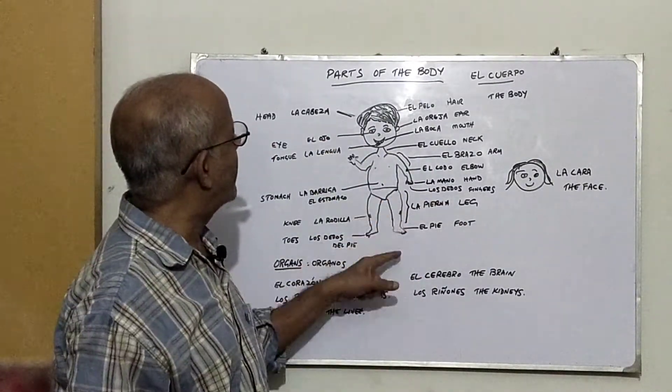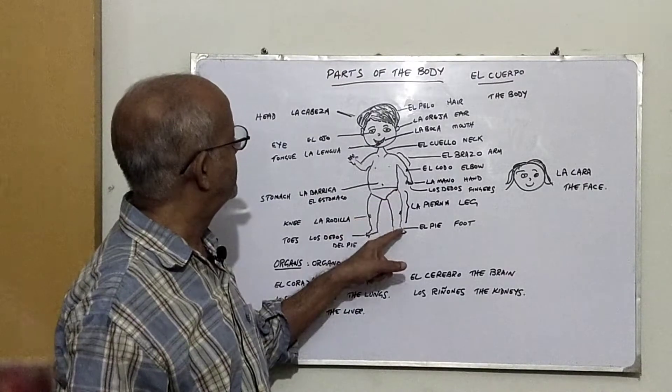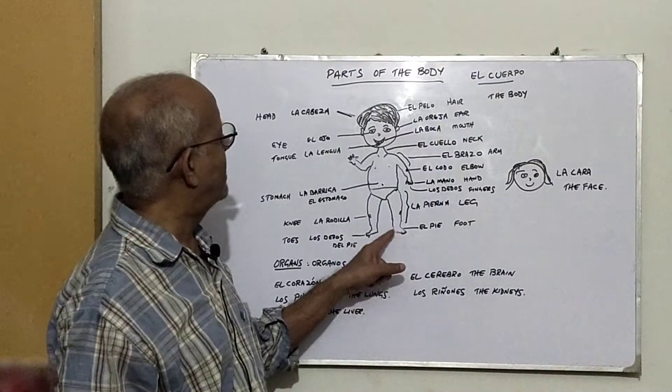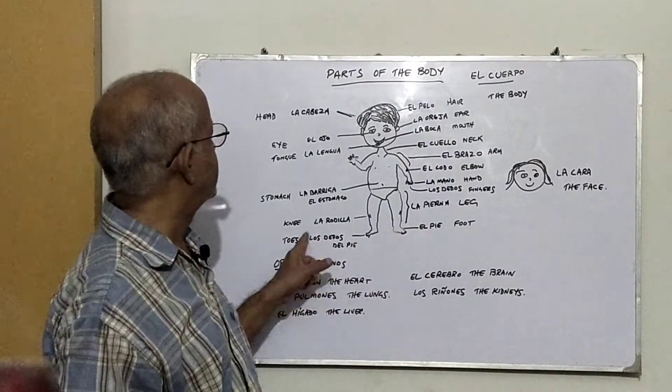Pierna - pierna is the part from here till the foot, it's called pierna. And the foot is called el pie, as I had already told you.